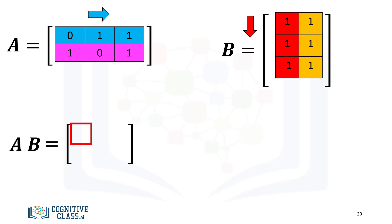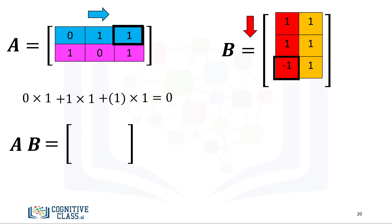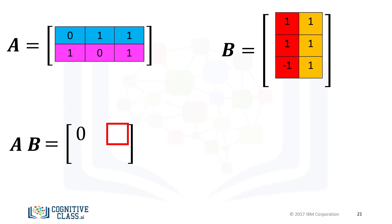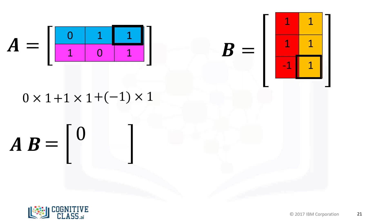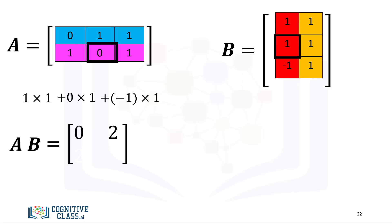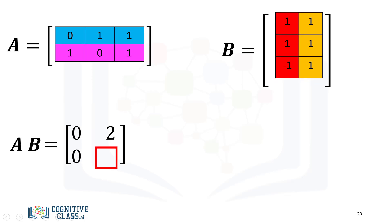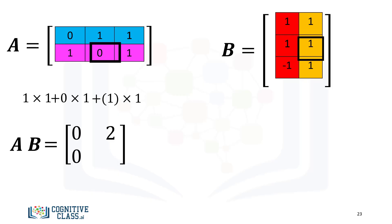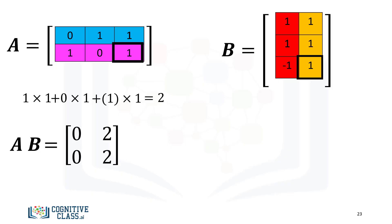For the first column and first row, we take the dot product of the first row of A with the first column of B. The result is zero. For the first row and the second column of the new matrix, we take the dot product of the first row of matrix A with the second column of matrix B. The result is two. For the second row and the first column, we take the dot product of the second row of matrix A with the first column of matrix B. The result is zero. Finally, for the second row and second column, we take the dot product of the second row of matrix A with the second column of matrix B. The result is two.